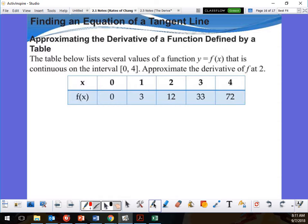The table below lists several values of a function y equals f of x that is continuous on the interval from 0 to 4. Is it including 0 and 4? Yes, brackets say yes. Approximate the derivative of f at 2. We don't have an equation here, so we can't go through and do our steps to find that. I'm going to show you a couple things that we can do for this.